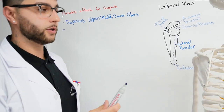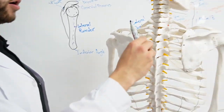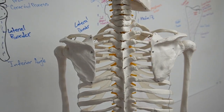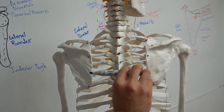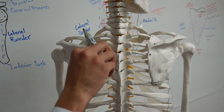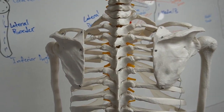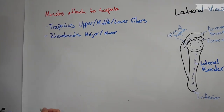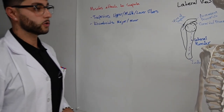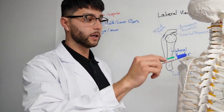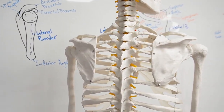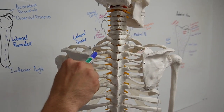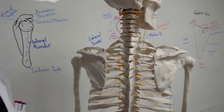After the trapezius muscle, you've got the rhomboids, which start off at the upper portion of your T-spine and go into the mid portion of your T-spine, attaching to the medial border of the scapula. From there, you've got the levator scapulae, which attaches from C1 to C4, and then goes to the superior portion of the medial border.